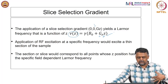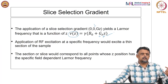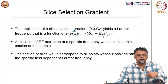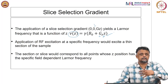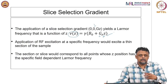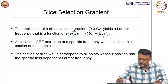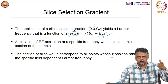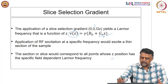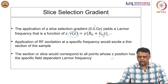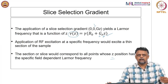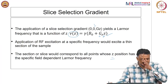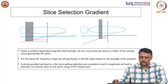Once we have this, we simultaneously apply the RF excitation pulse. Since the RF excitation has a specific frequency and a bandwidth, it will only excite tissue in a thin section — the section corresponding to all points whose Z position gives a specific field-dependent Larmor frequency. The RF pulse has a center frequency and bandwidth, and only those spins at the corresponding Z positions will be flipped into the plane.